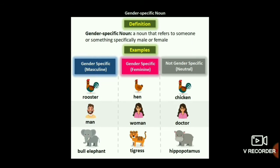Gender-specific noun: a noun that refers to someone or something specifically male or female. For example — 'Mr. Klein' is gender-specific masculine, 'feminine' refers to female, and 'neutral' means both. Rooster is male gender, hen is female gender, chicken is neutral. Man is male gender, woman is female gender, doctor is neutral — both he or she we call doctor. Bull, elephant, tigress, hippopotamus are further examples of gender nouns.